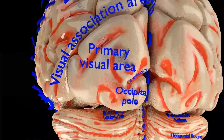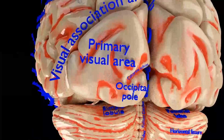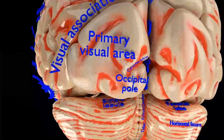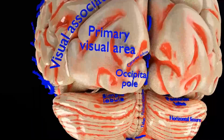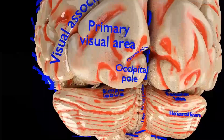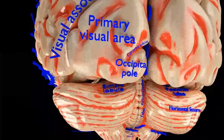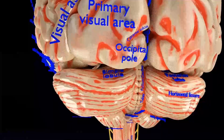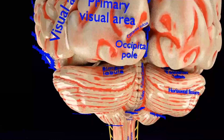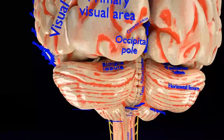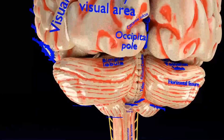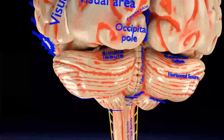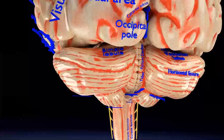In my next video I will show the structures at the base of the brain. For viewers who have watched only a few parts of this series, I would advise watching all five parts in sequential order to understand the whole brain anatomy clearly.